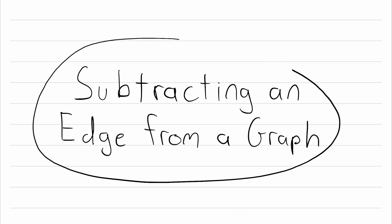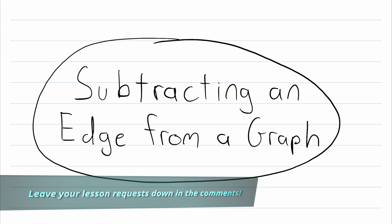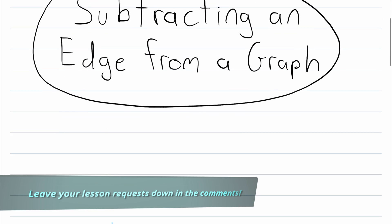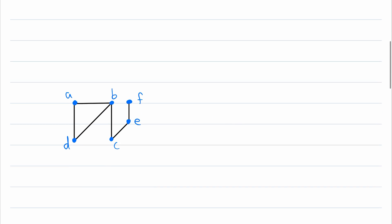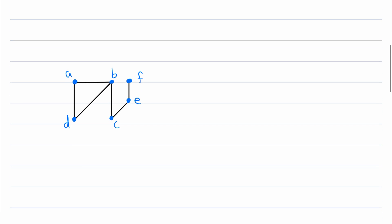What does it mean to subtract an edge from a graph — to delete an edge? That's what we'll be going over in today's Wrath of Math lesson. Previously we've gone over how to delete a vertex from a graph, which is a little trickier because we also have to delete the incident edges, but when we delete edges it's fairly simple.